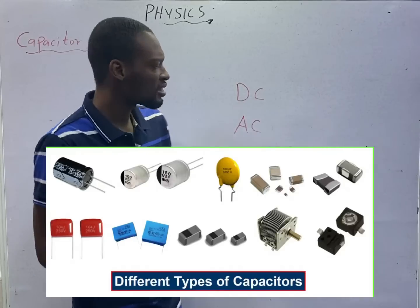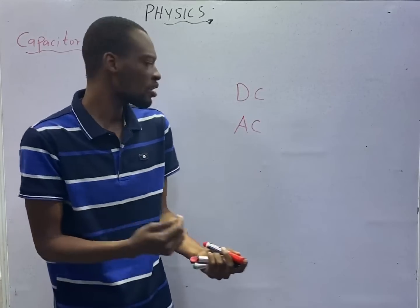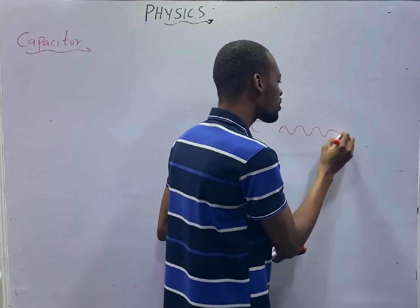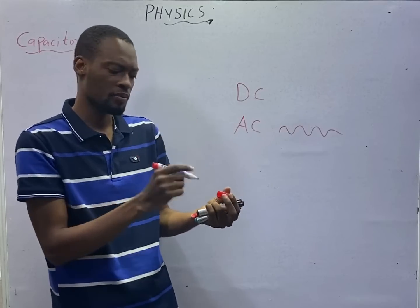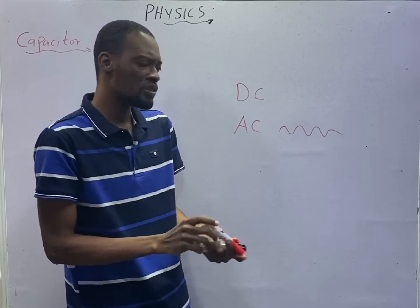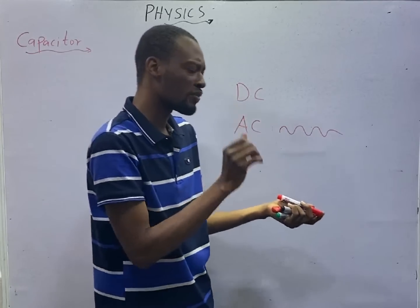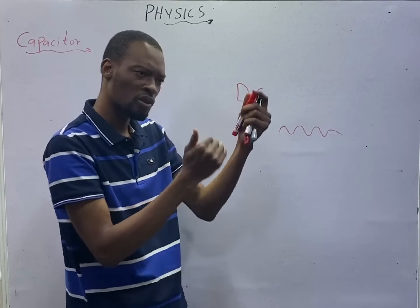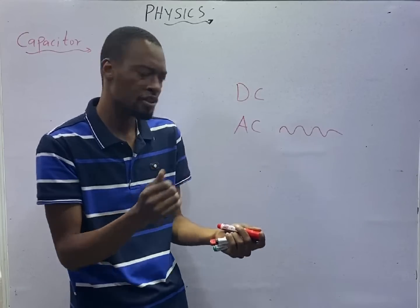For direct current, there are terminals, positive and negative. But alternating current changes the direction of flow. It flows through, it goes off and down. And like I told you, the bulbs in your house, electric bulbs, if you look at them carefully, it is actually going on and off. The AC bulbs, on, off, on, off at a very fast rate.